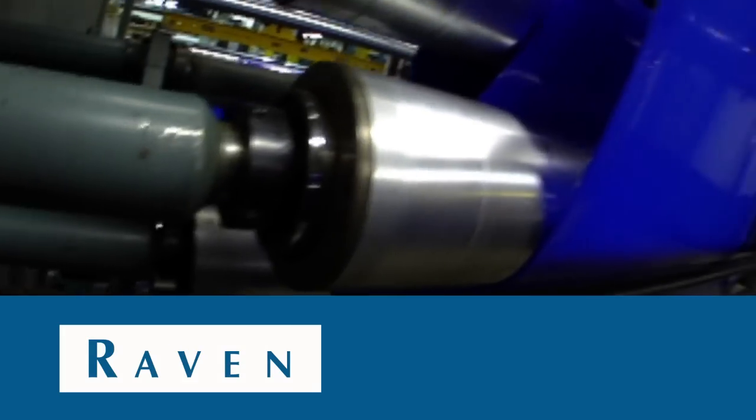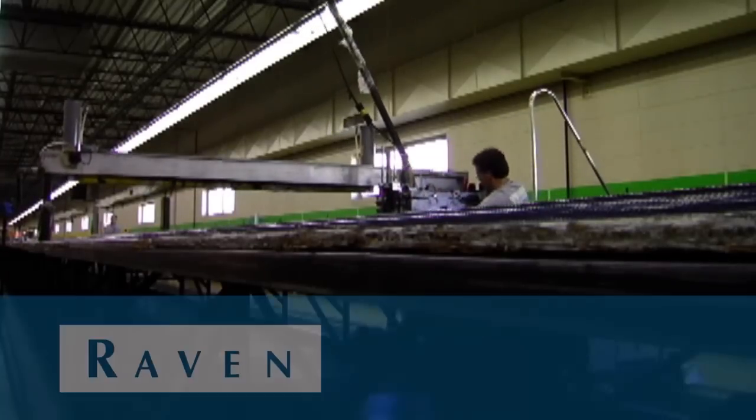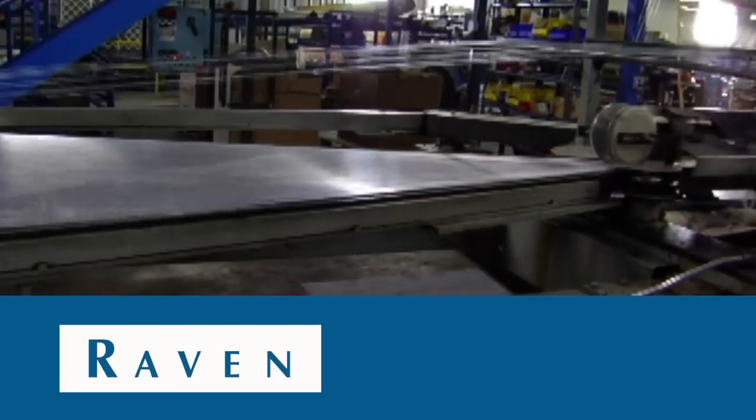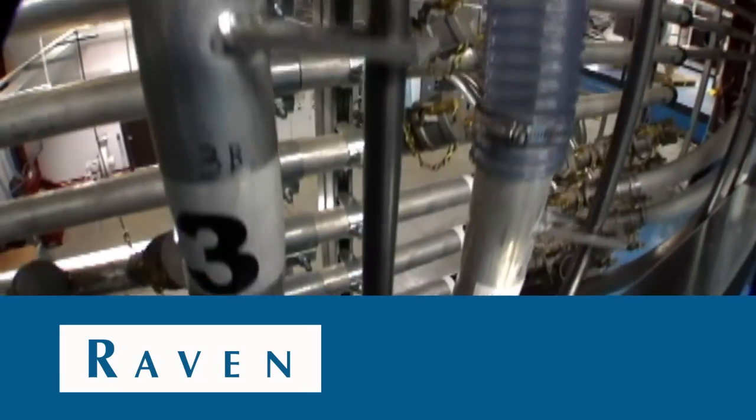That means there's no challenge too unique for us to tackle from start to finish. From seven layer blown films to our laminated films to a variety of roll sizes, Raven's remarkable growth and success enabled us to be ranked on Forbes list of America's best small companies, demonstrating that we deliver big results.